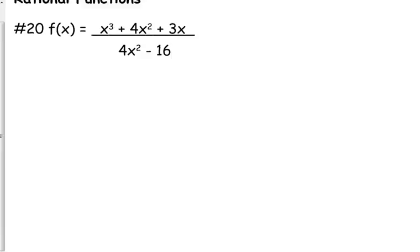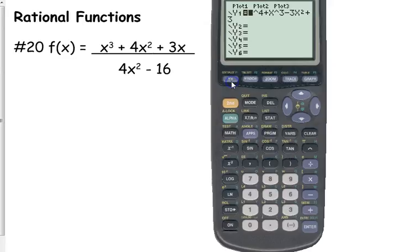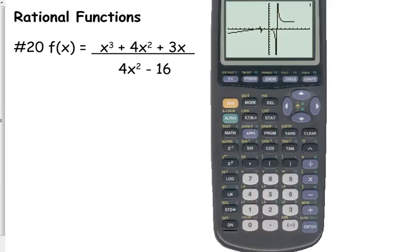Let's look at a rational function really quick. This is number 20. Rational functions are related to polynomials because rationals are built from polynomials. I would just type in the original function because I want to see everything that's going on with the graph. Remember, put that numerator in parentheses, put the denominator in parentheses.